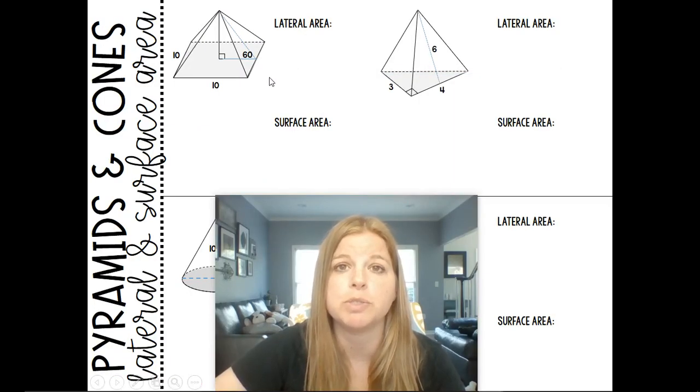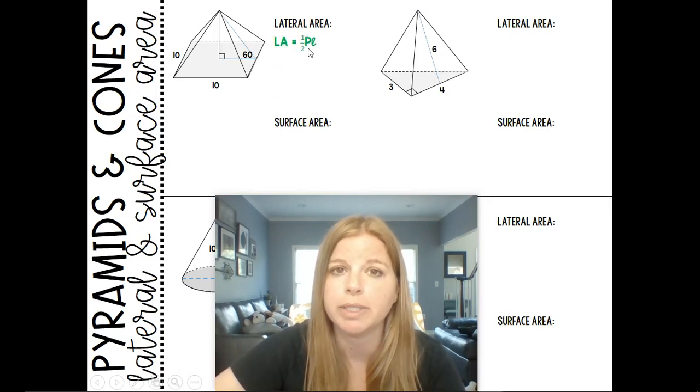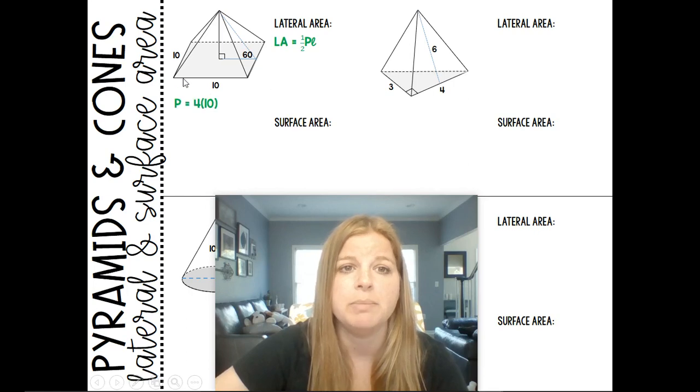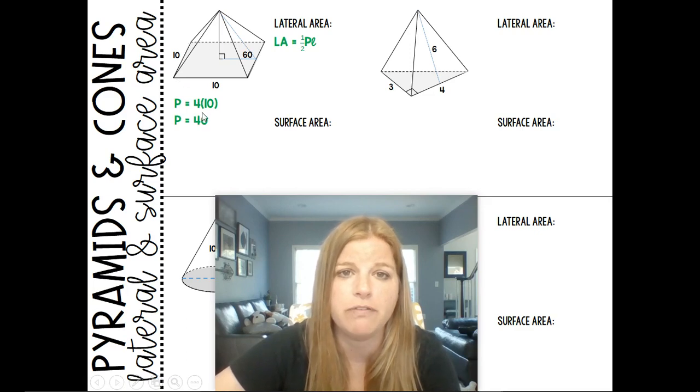Okay, so the first thing we're going to do is we're going to calculate the lateral area and the surface area of this square pyramid. So here's our formula. We need the value of P. P is the perimeter of the base. So 4 times 10 is going to give me a perimeter of the base of 40.